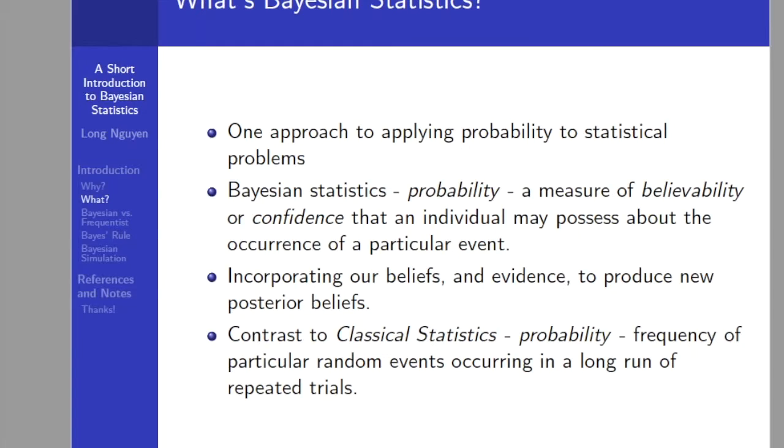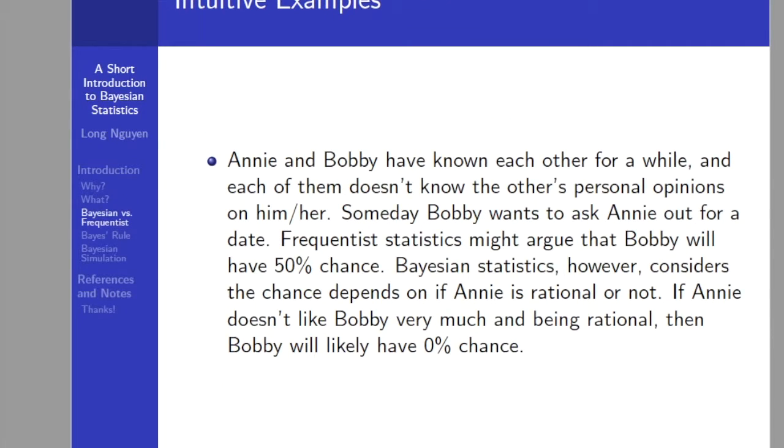Frequentist statistics assumes that probabilities are the frequency of particular random events occurring in the long run of repeated trials. For example, as we roll a fair, unweighted six-sided die repeatedly, we would see that each number on the die tends to come up one-sixth of the time.